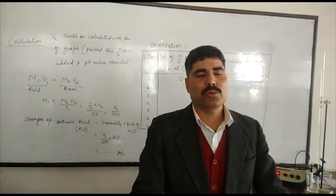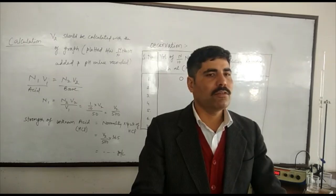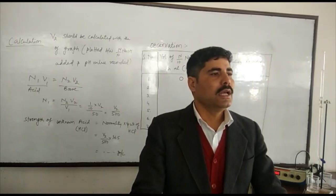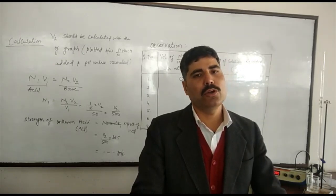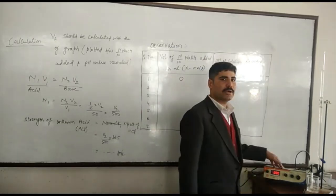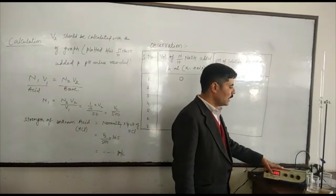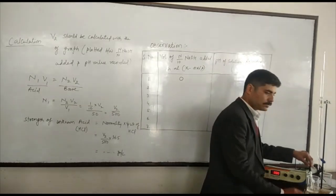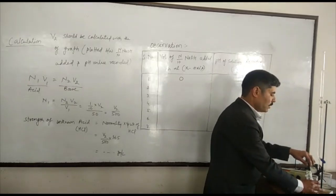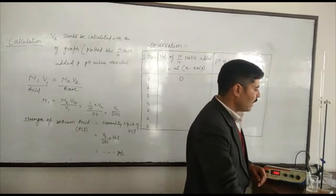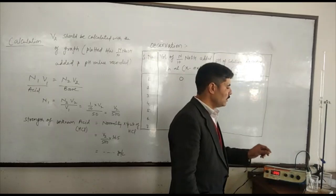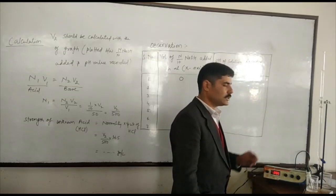Now we move to the procedure part of the experiment. First, we switch on the pH meter and leave it for 15 minutes for calibration, and then we calibrate it with the help of buffer solutions of pH 4 and 9.2 respectively. This is the pH meter already calibrated by the buffer solutions, and we dip the glass electrode in the 50 mL of HCl — the given sample solution — and write down the reading of the pH of this acid.